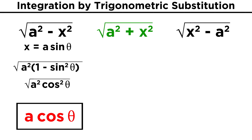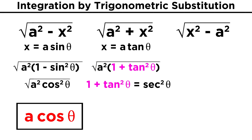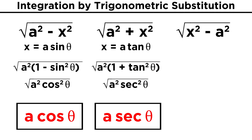Now let's look at the next expression, root a squared plus x squared. For this one, let's make x equal to a tangent theta. Just like the first example, we square it, factor out the a squared, and we recognize that another Pythagorean identity is now applicable. One plus tangent squared is secant squared, so we apply that, and then get rid of the square root to get a secant theta. Again, much nicer looking.